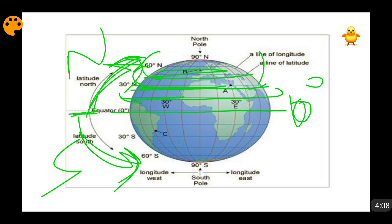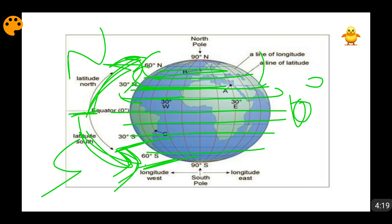Similarly, when we go into the south direction, you can see this line — this is also a latitude — written as 30 degree south latitude, then 60 degree south latitude. So these are latitudes because they are running parallel to the equator, running in the east-west direction.